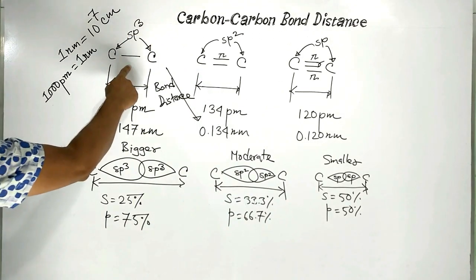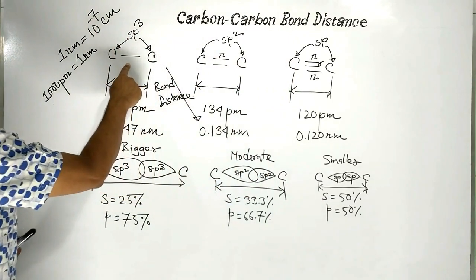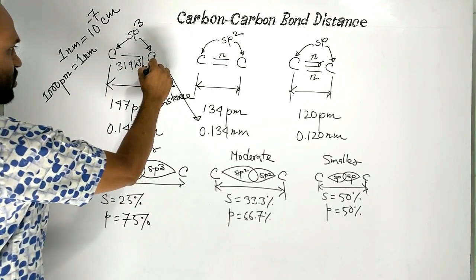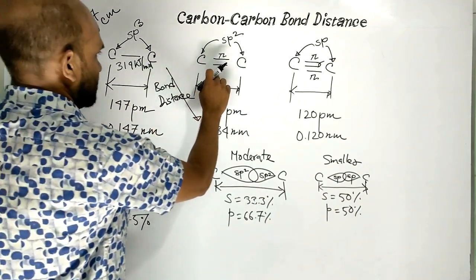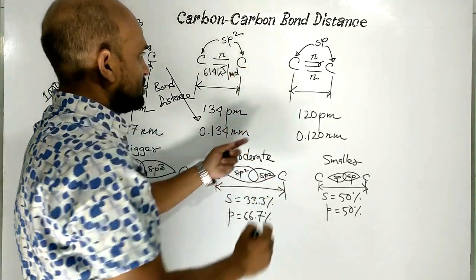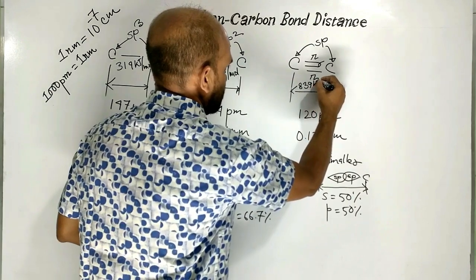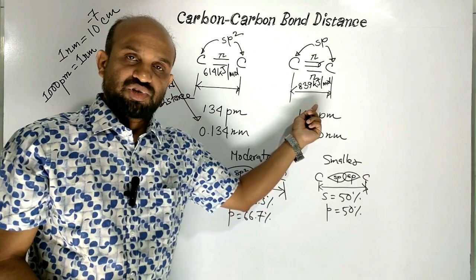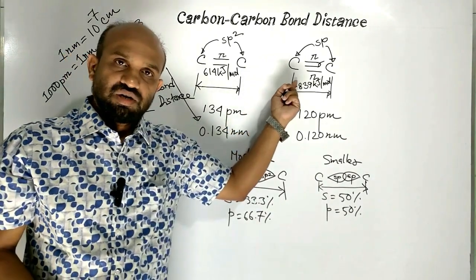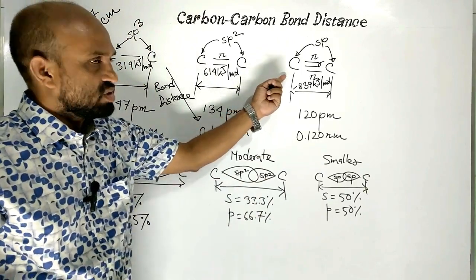Now let us consider bond energy. The bond energy of a carbon-carbon single bond is 314 kilojoules per mole. The bond energy of a carbon-carbon double bond is 614 kilojoules per mole. And in the case of a carbon-carbon triple bond, the bond energy is 839 kilojoules per mole. In the case of the triple bond, bond energy is highest because two carbon atoms are connected by three bonds.